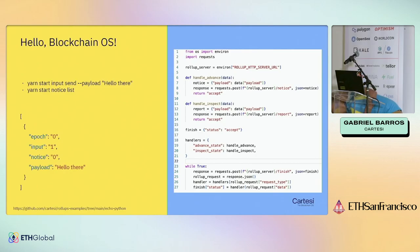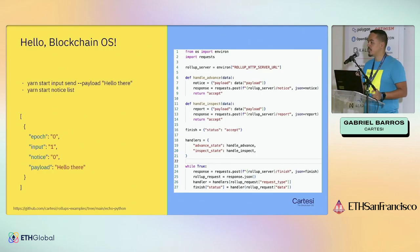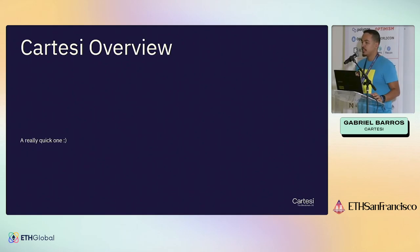Here is a dApp written in Python that works right now inside the Cartesi machine. I don't expect you to understand it right now, but it's just to show that it's simple plain Python — you can have libraries and you can have interactions within the machine, and you have access to other APIs that you develop.